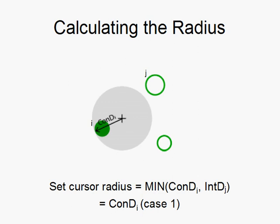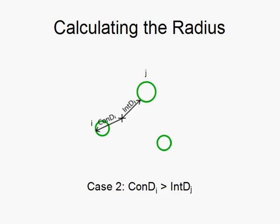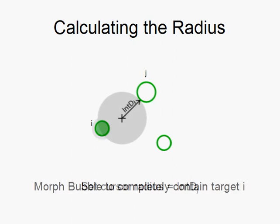In this case, the cursor completely contains the closest target. If, however, the containment distance is larger of the two values, the bubble cursor will only intersect the closest target. To compensate, we morph the shape of the bubble so that the target is completely contained.